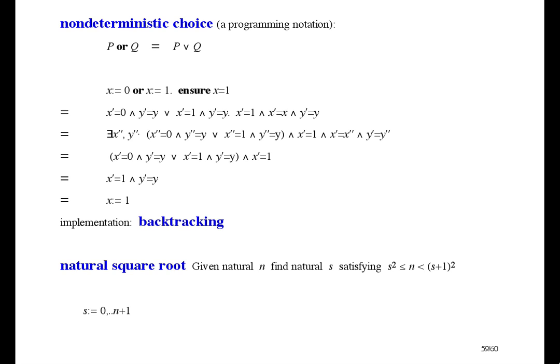First, a non-deterministic assignment using the notation suggested in one of the exercises at the back of the book. That doesn't mean s gets the bunch 0 to n plus 1. It means s gets one of the numbers in the bunch 0 to n plus 1. Any one of them. It's s gets 0 or s gets 1 or s gets 2 and so on, and then ensure exactly the thing we want to be true.